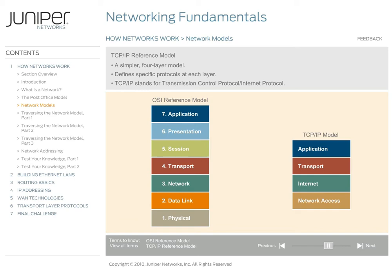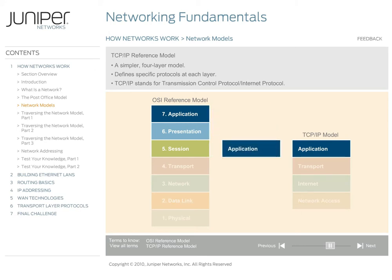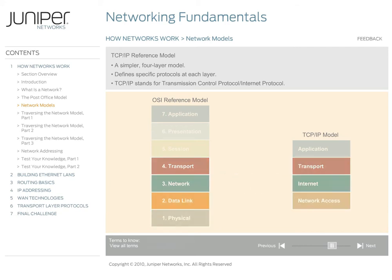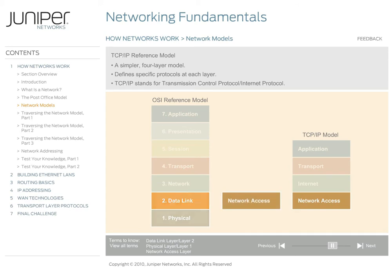Let's take a moment to compare the two reference models. On screen, you'll see both side-by-side. The first difference you'll notice is that the first three layers of the OSI reference model fold into a single layer in the TCP/IP reference model, simply called the application layer. The transport and network layers map directly between the two models. The TCP/IP reference model merges the lower two layers into the network access layer, which focuses on how data is transmitted over any type of physical network, regardless of whether it's a LAN or a WAN. The TCP/IP model is not concerned with the details of this layer and uses existing standards such as Ethernet or ATM. We cover these technologies later in the course.